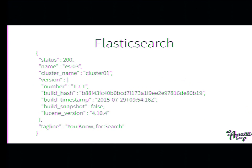How does Elasticsearch look? When you request Elasticsearch, you just start it and it says it's running on port 9200 — you type that in. It looks like: okay, I'm Elasticsearch instance number three, I'm on cluster one. It says which build this is, and the tagline, you know, for search. That's the first impression you get.